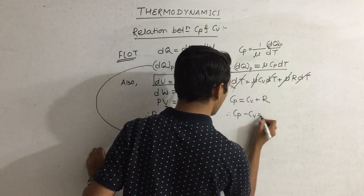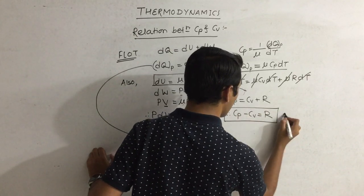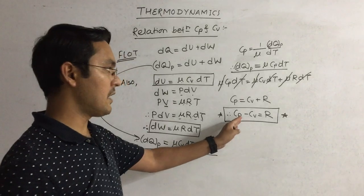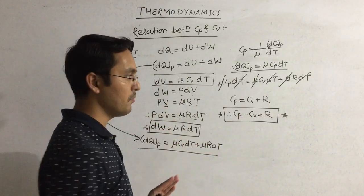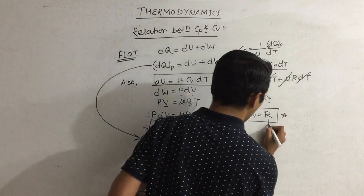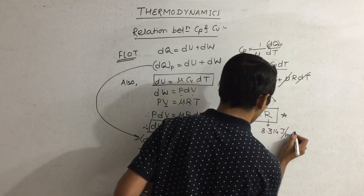Therefore, Cp minus Cv is equal to R. This is the most important relation. Cp, molar specific heat at constant pressure, minus Cv, molar specific heat at constant volume, equals R, which has a value of 8.314 joule per mole Kelvin.